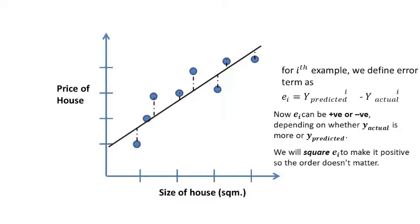We will square ei's to make it positive, so the order doesn't matter. Cost function will be defined as 1 by 2m times e1 square plus e2 square and so on till em square, where m is the number of examples and ei's are error terms.